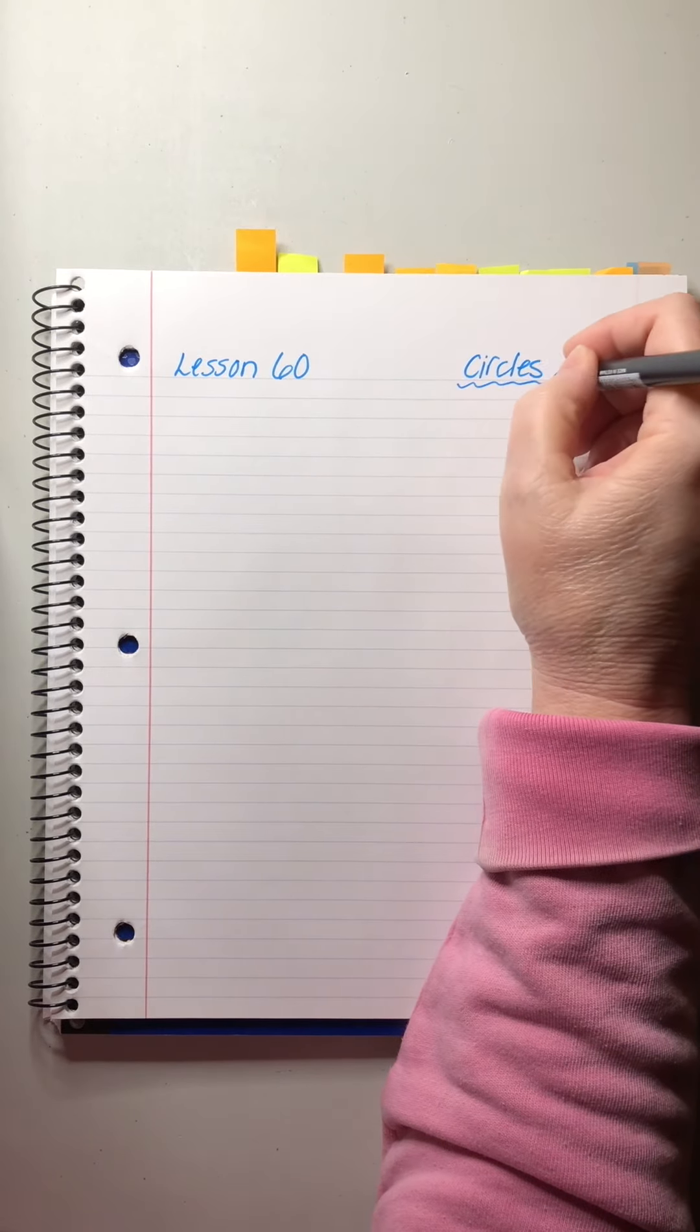Saxon Algebra 1 half lesson 60. Today is an exciting day my students, we're going to start talking about circles. Circles are a very interesting shape in geometry along with triangles which we've been discussing, but we're going to really dive into the geometry of circles today.